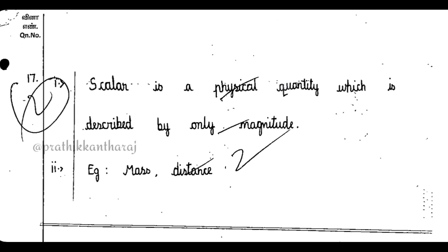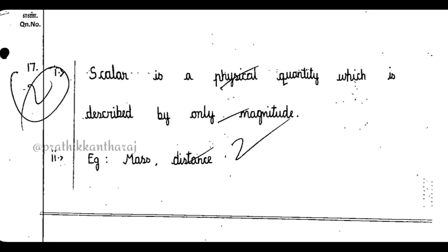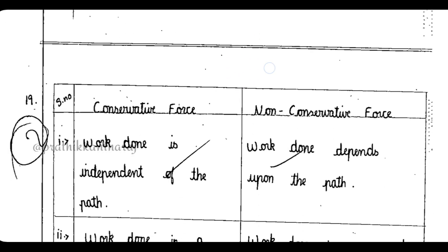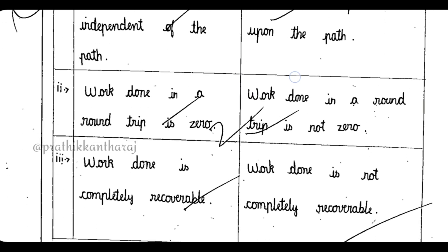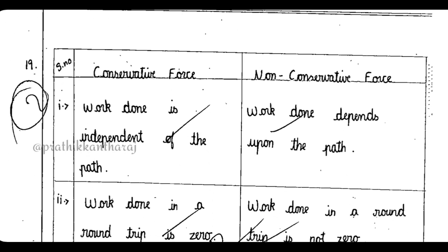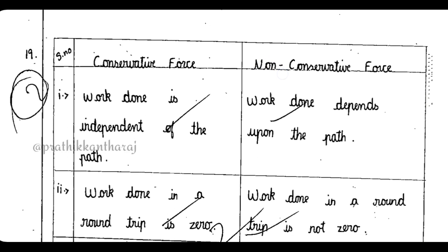For example, what is scalar quantity? You have to give one example — that is quite enough. That's why we have to distinguish. For example, the key points have to be on top. Conservative force and non-conservative force — these are the key points to highlight.